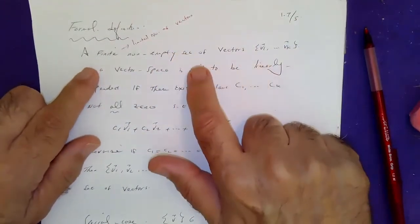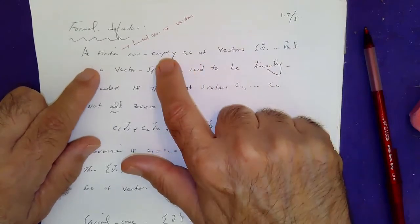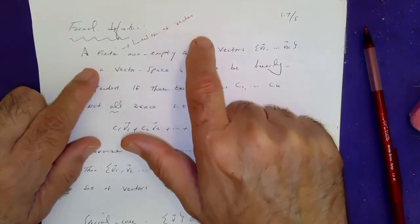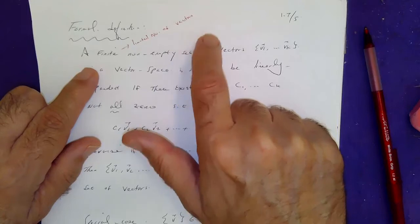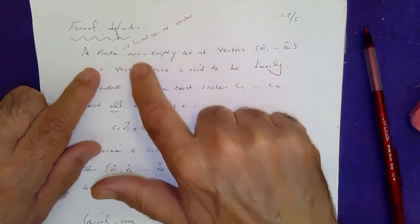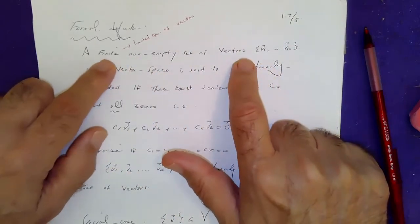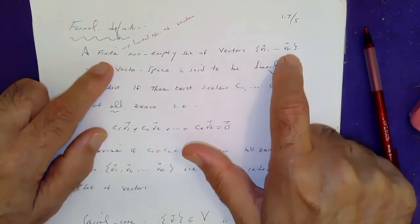A finite, non-empty, that means it cannot be a zero set. You cannot have nothing in the set. You've got to have something. So you've got to have limited number of something in the set.